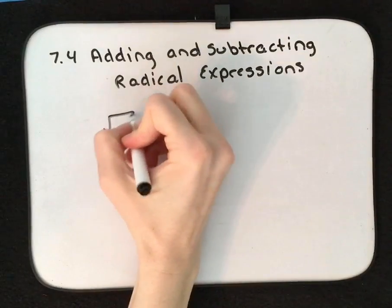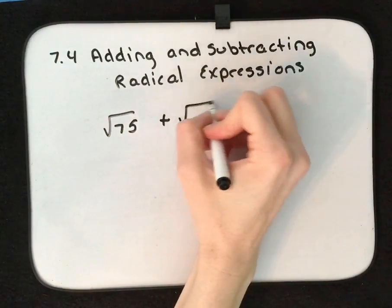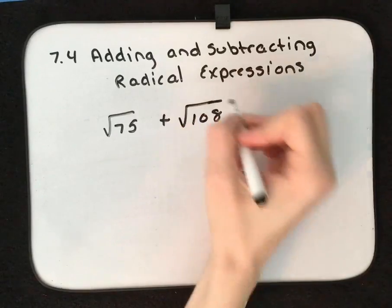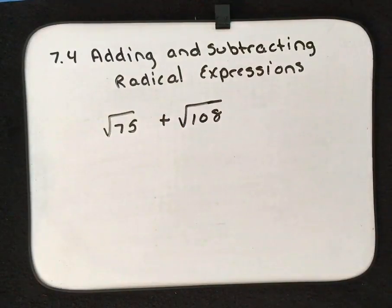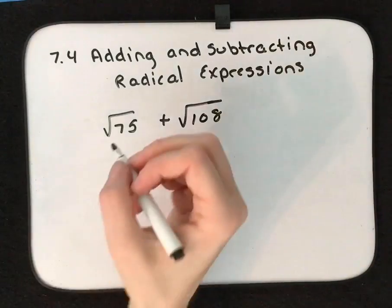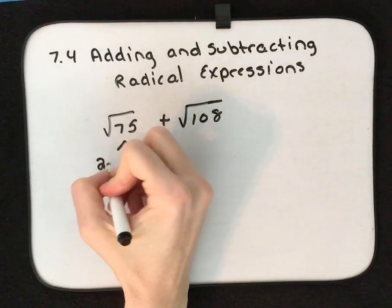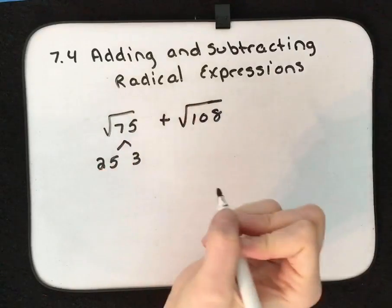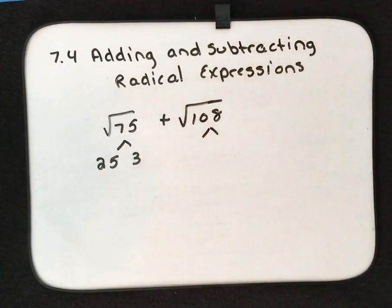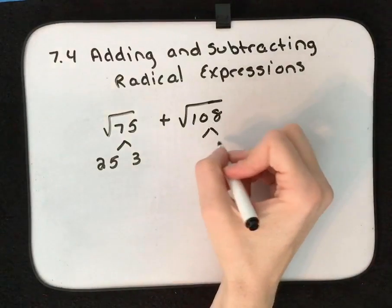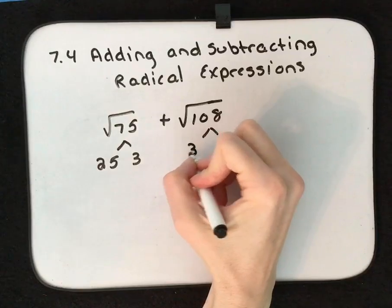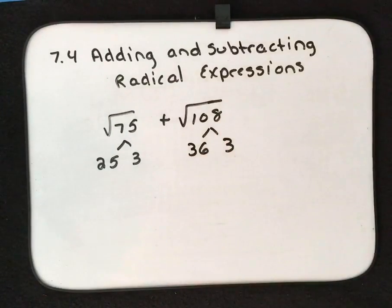We have √75 + √108. Right now, it doesn't look like we can do a whole lot. Let's see if we can break this down though. So 75, well, a perfect square component of that would be 25 × 3. 108, I'm not going to get a 25 out of that. So let's see what happens when I divide it by 3. If I have 108 ÷ 3, that is 36. So 36 and 3.